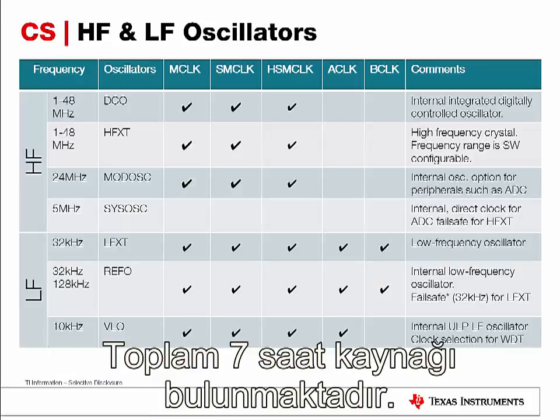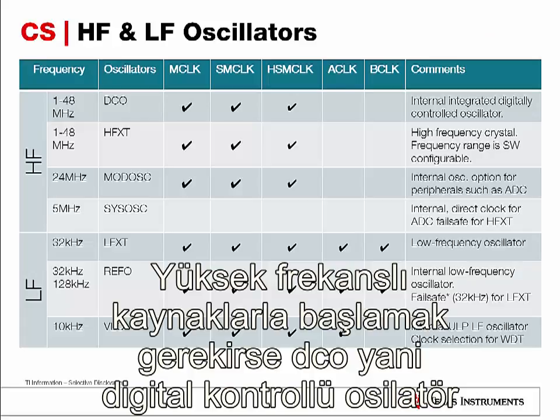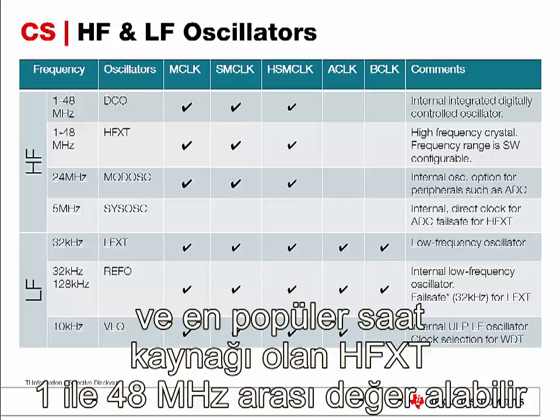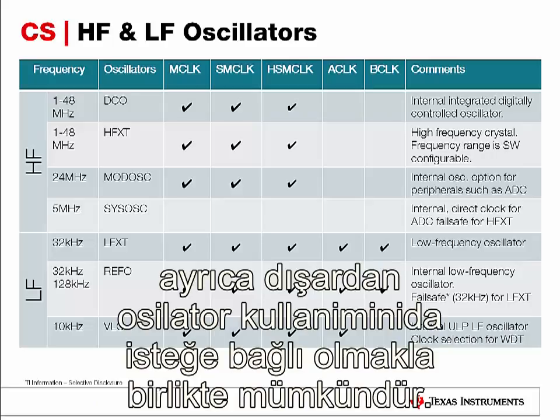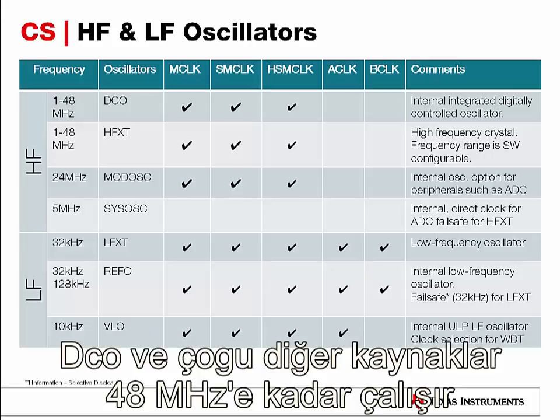There are seven total clock sources available on the MSP432 P4XX family. Starting off with the high-frequency clock sources, we have the digitally controlled oscillator, or DCO, which is an internal and most popular clock source that allows you to generate high-frequency anywhere from 1 to 48 MHz. You can also use a high-frequency external crystal to source a high-speed frequency clock. Both DCO and the high-frequency crystal can operate up to 48 MHz.